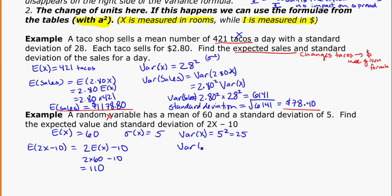And for the variance of 2x minus 10, that's going to be equal to 2 squared times the variance of x. And we don't have that minus 10 there. The minus 10 gets dropped off. So that's 4 times 25, which is equal to 100. That's my variance. To get back to my standard deviation, take the square root of the variance, and you get 10.